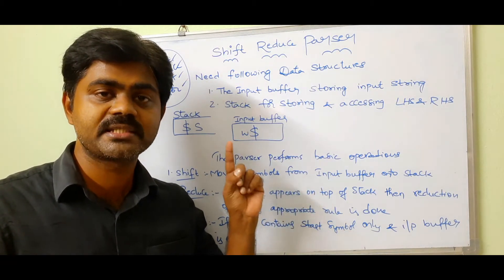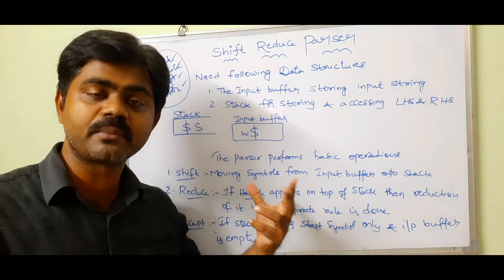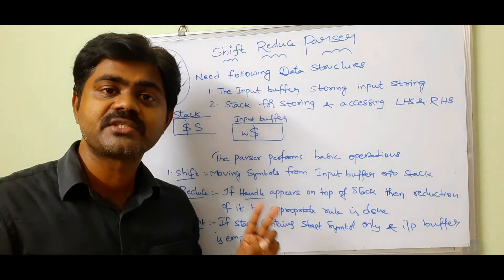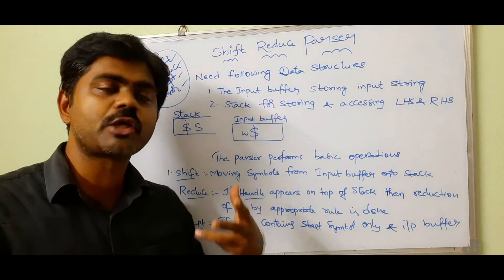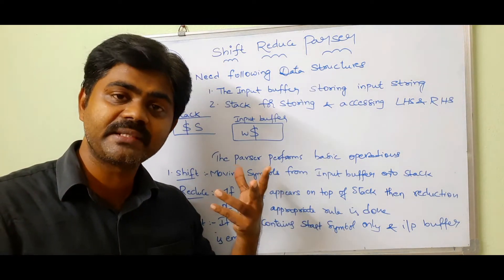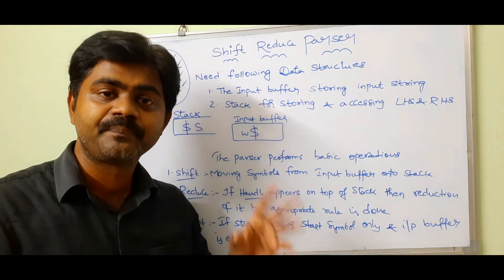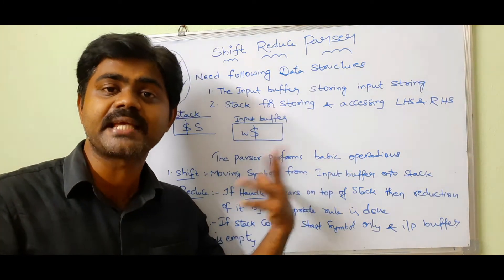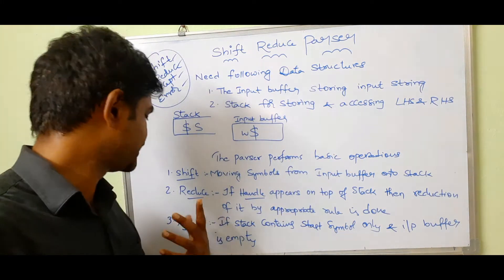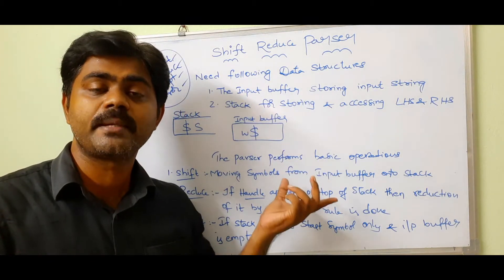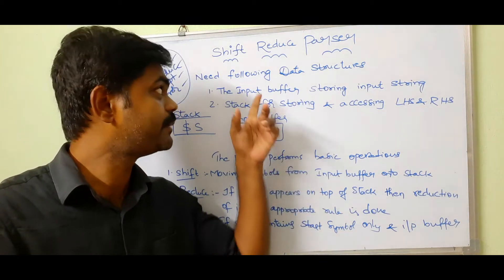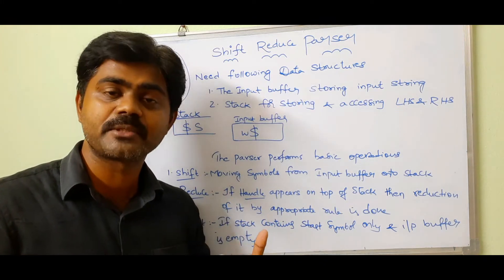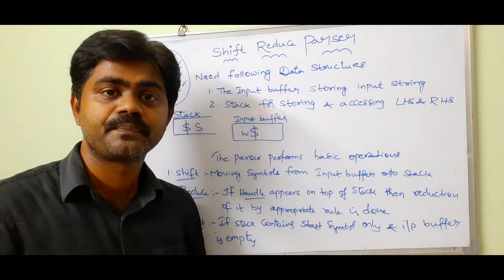To recap: shift moves symbols from the input buffer onto the stack; reduce applies when a handle appears on top of the stack; accept occurs when the stack contains only the starting symbol and the input buffer is empty; and error occurs otherwise. Now we will see one or two examples to get a clear understanding of shift-reduce parsing.